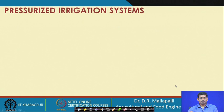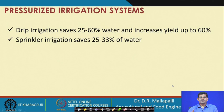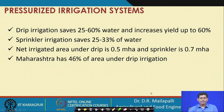For pressurized irrigation systems like drip and sprinkler irrigation: drip irrigation saves 25 to 60 percent of water and increases yield up to 60 percent, while sprinkler irrigation saves 25 to 33 percent of water. The net irrigation area under drip irrigation is 0.5 million hectares and under sprinkler is 0.7 million hectares, though the target is to bring 10 percent of gross irrigated area under micro or pressurized irrigation. Maharashtra is the largest state practicing micro irrigation systems.